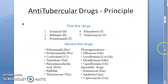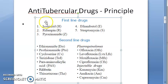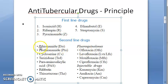First line drugs include: isoniazid, rifampicin (also called rifampin), pyrazinamide, ethambutol, and streptomycin. You need to know these well.